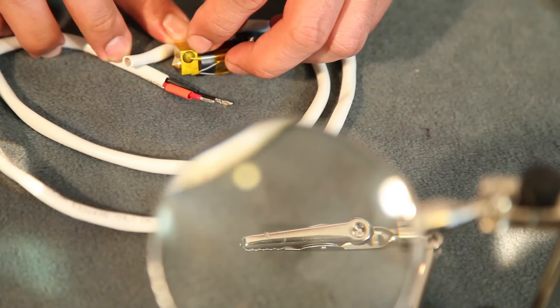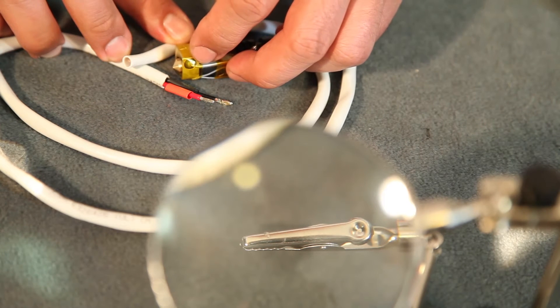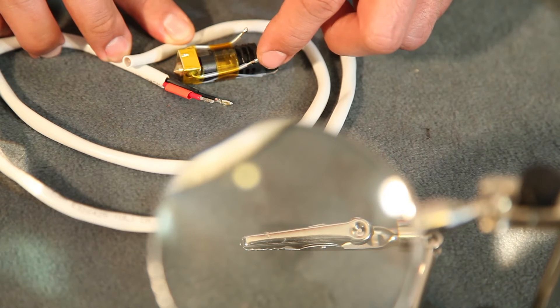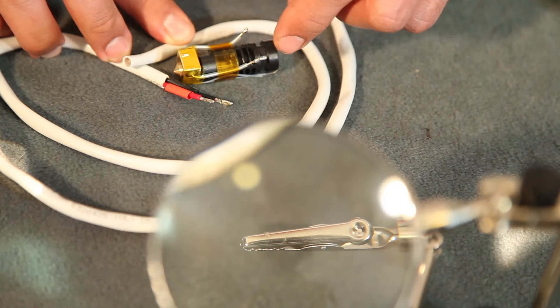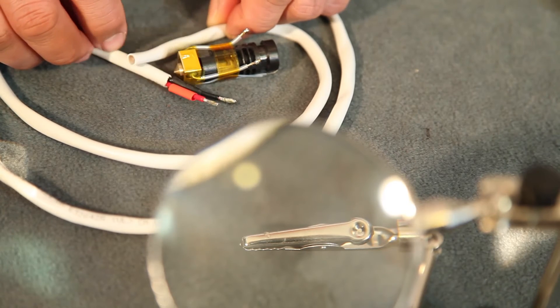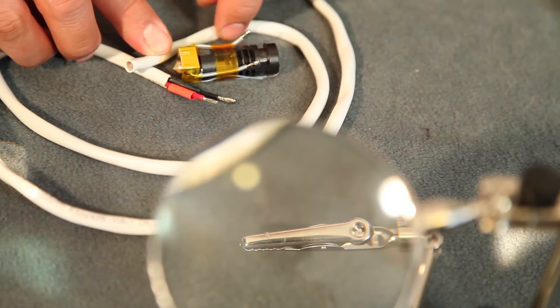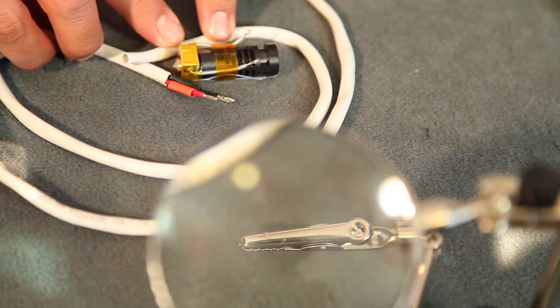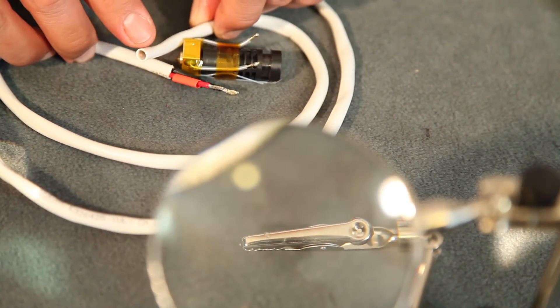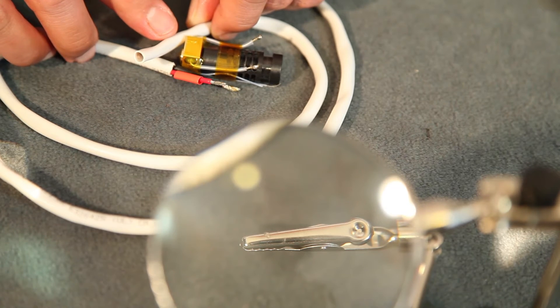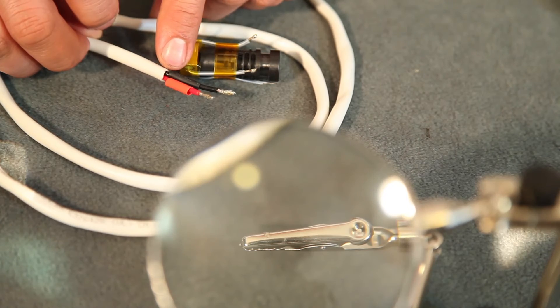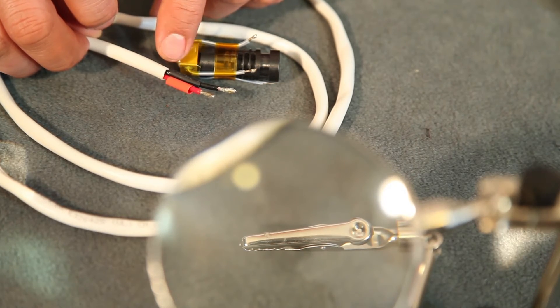So now we're going to be soldering the hot end. You're going to utilize the heating element wires that we inserted earlier. It doesn't matter which wire goes to which. You want to cut off an inch, inch and a half of the white sheeting to expose the red and black wire inside. You want to prep the wire ends for soldering using proper soldering techniques, and you want to add some shrink tubing to cover it up once you finish soldering.